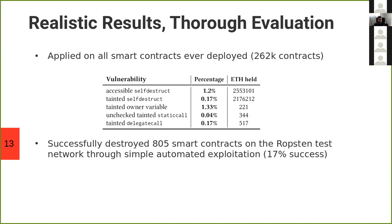We also implemented a tool to exploit the accessible self-destruct vulnerability. We were successfully able to destroy 805 smart contracts on a fork of the Ropsten test network using simple automated exploitation. This represents a 17% success rate on the flagged smart contracts, which is relatively high for something that simple and automated.